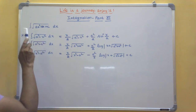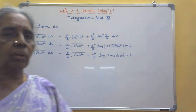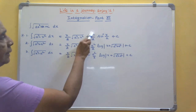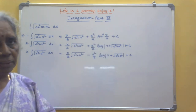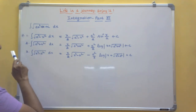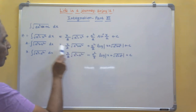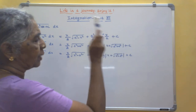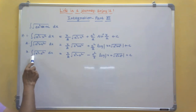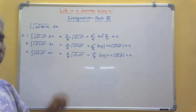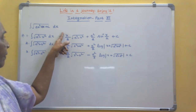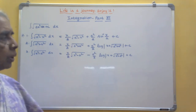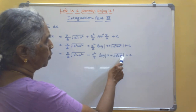Integral of √(a² − x²) dx equals x/2 · √(a² − x²) + a²/2 · sin⁻¹(x/a) + C. Integral of √(a² + x²) dx equals x/2 · √(a² + x²) + a²/2 · log|x + √(a² + x²)| + C. Notice the similar pattern: x/2 times the same root expression each time. Integral of √(x² − a²) dx equals x/2 · √(x² − a²) − a²/2 · log|x + √(x² − a²)| + C — only the sign changes to minus here.